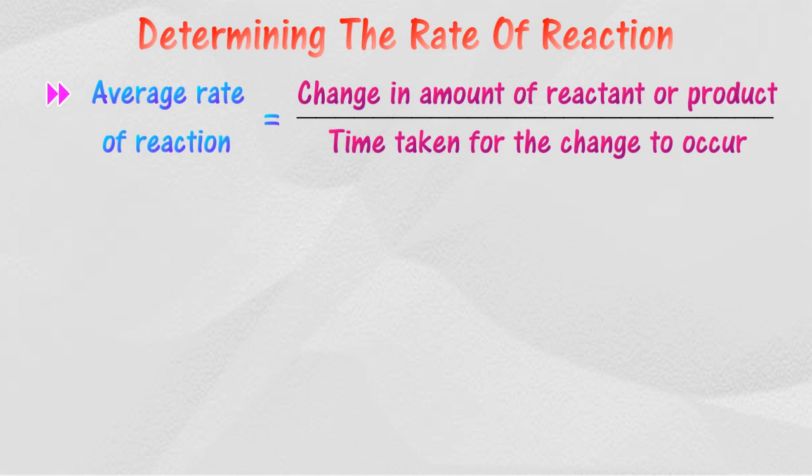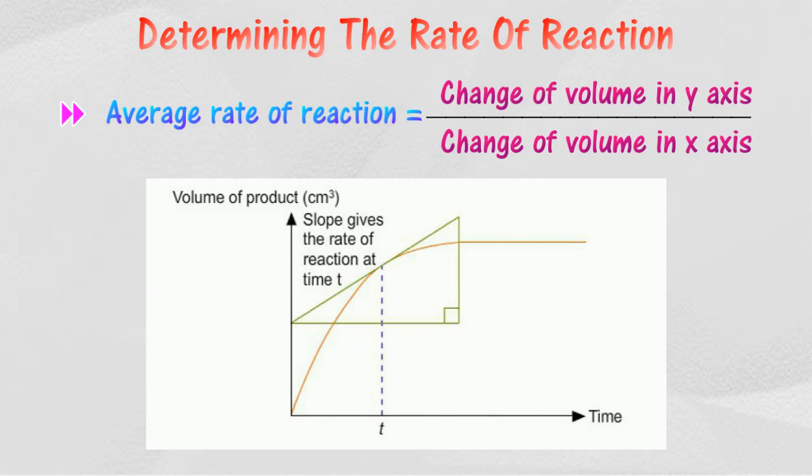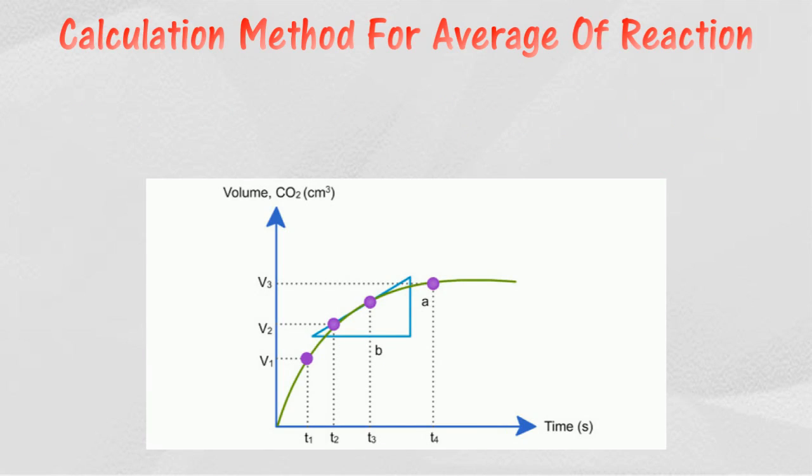The average rate of reaction is how fast a reaction progresses over a time interval. Instantaneous rate of reaction can be obtained from the gradient of the tangent on the graph of the change in amount of reactant or product against time. Below is the calculation method for average and instantaneous rate of reaction using graphs.